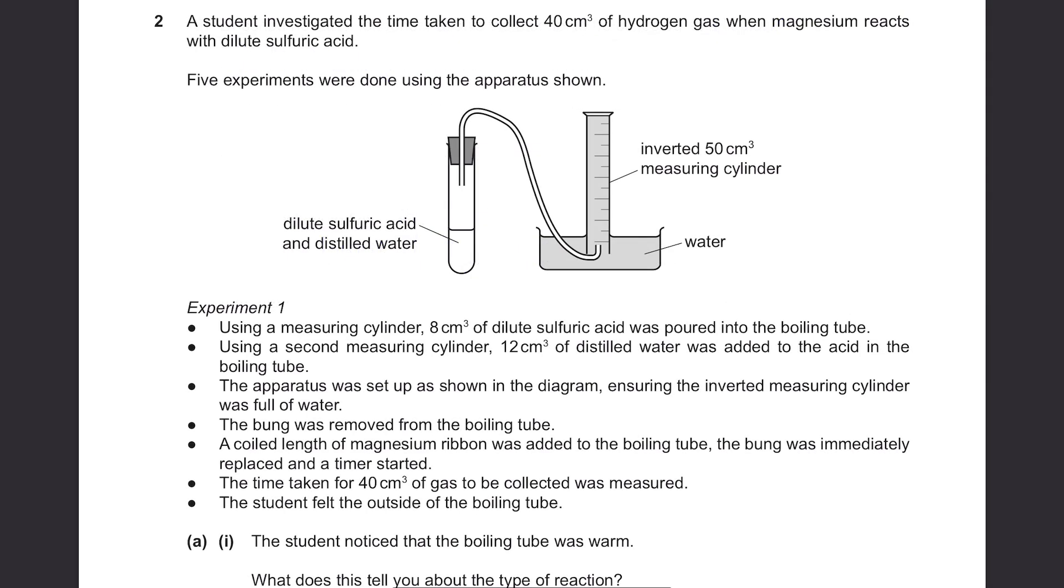Question 2, a student investigated the time taken to collect 40 cm cubed of hydrogen gas when magnesium reacts with dilute sulfuric acid. So they're gonna put magnesium inside dilute sulfuric acid, which is here, and measure the time taken to collect 40 cm cubed of hydrogen gas through this apparatus.